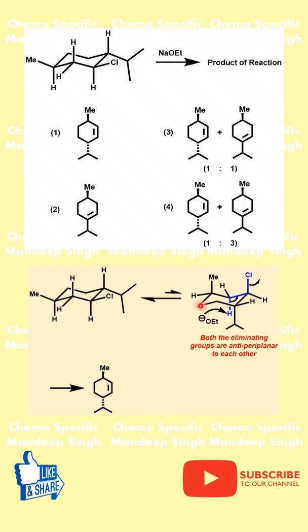We know that there is an equilibration between the stable and the less stable conformer, and it is the less stable conformer which has the right alignment of eliminating groups, which is hydrogen and chloro.